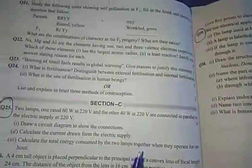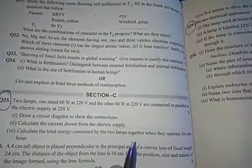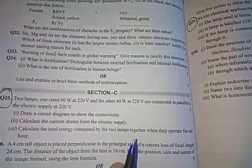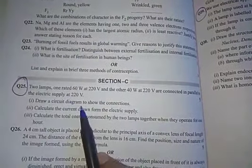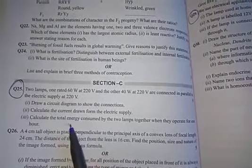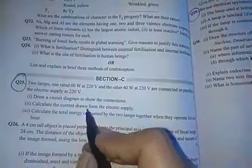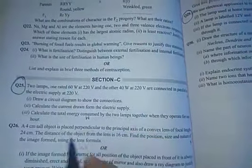Now next, it is a five marks question. Two lamps, one rated 60 watt at 220 volt and the other 40 watt at 220 volt are connected parallel to electric supply. Draw circuit diagram, calculate current and total energy. For energy remember you have to calculate work done only. You have to write the marked questions.